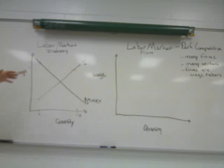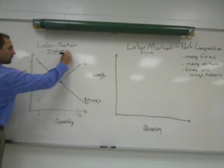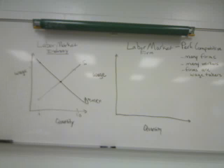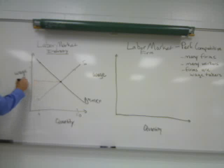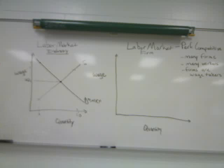Where the demand and supply curves meet is the market or industry equilibrium point, and this gives us the market wage — let's call it W1. This is the industry-produced market wage for this particular skill set in this perfectly competitive market, which we've defined as having many firms and many workers.